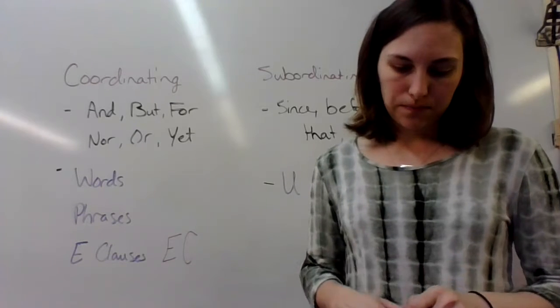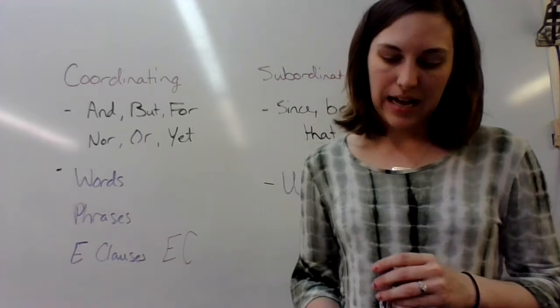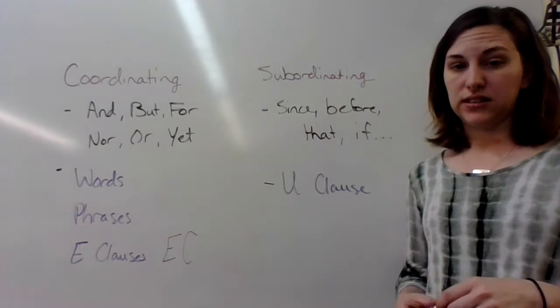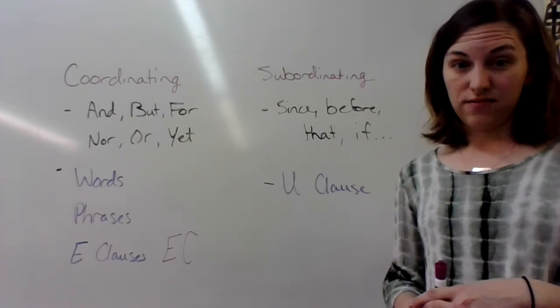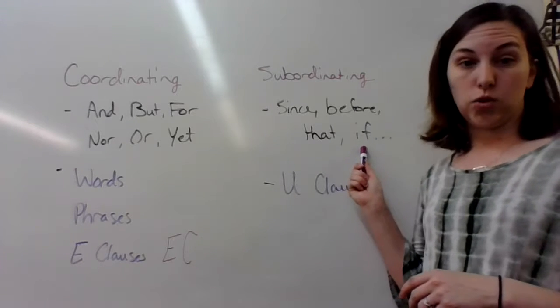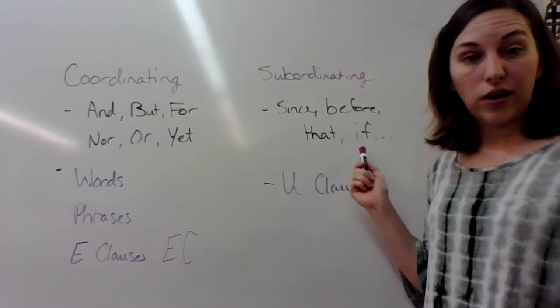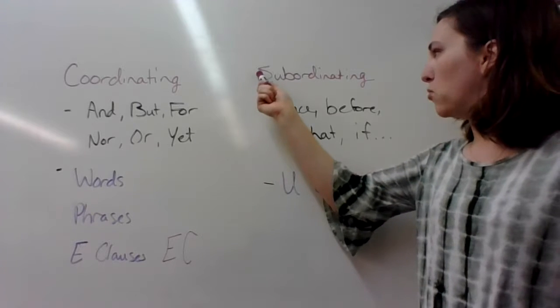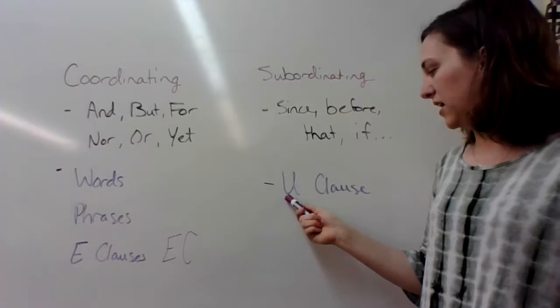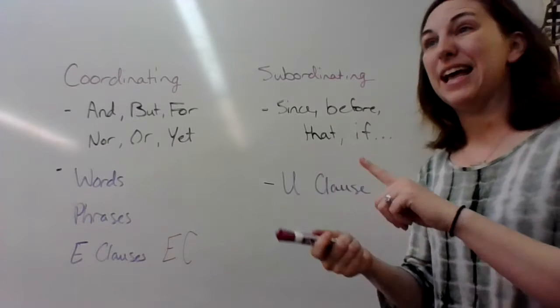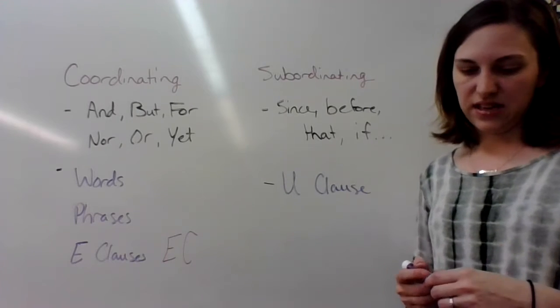Number two. If we leave immediately, we may arrive on time. It should jump right out at you right at the very beginning. It's the word if. If we leave immediately, underline it, and we really don't have to go any farther because it is a subordinating conjunction, meaning it's joining to an unequal clause, a dependent and an independent clause. Unequal clauses.